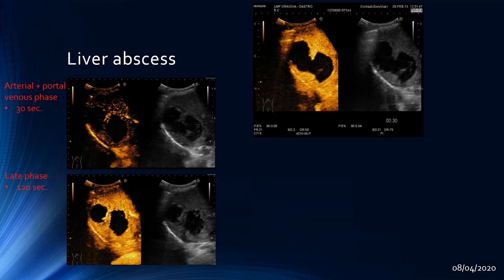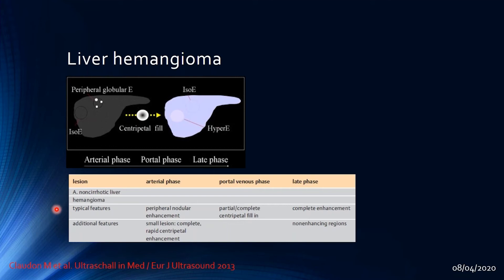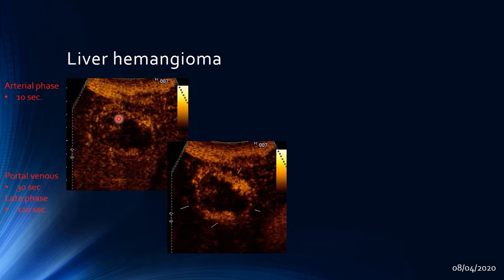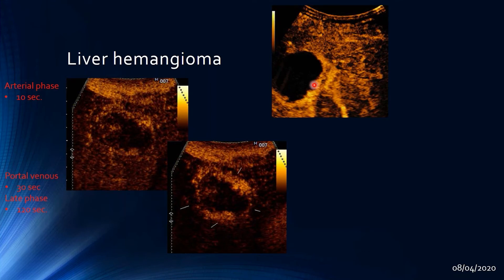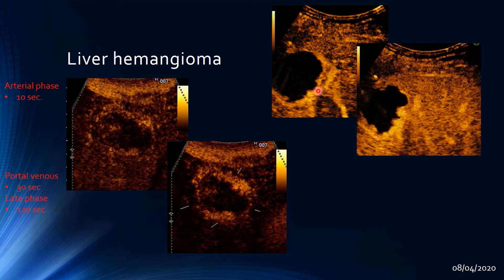Liver hemangiomas have a typical appearance: peripheral nodular enhancement in the arterial phase with rapid centripetal fill-in for small lesions, and complete centripetal fill-in during the portal and late phases — sometimes with non-enhancing regions. The example shows peripheral centripetal enhancement gradually filling in towards the center in a nodular, budding pattern until the lesion is completely filled.